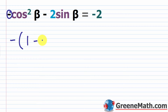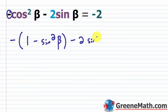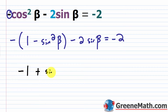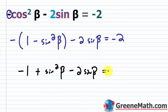Substituting, we get the negative of the quantity (1 minus sine squared beta), minus 2 times sine of beta equals negative 2. The negative must be distributed to everything, giving us negative 1 plus sine squared beta minus 2 times sine of beta equals negative 2.